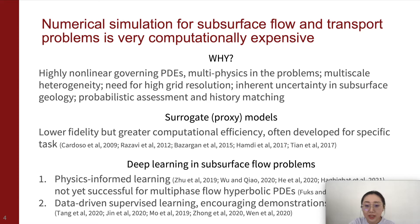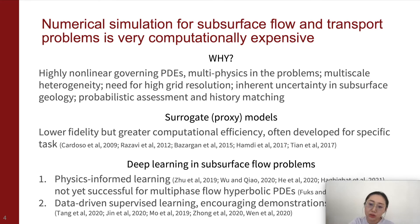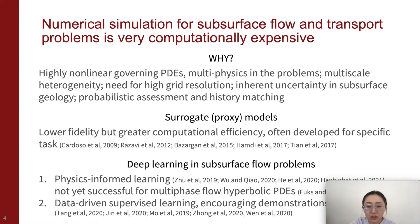In recent years, deep learning has shown growing potential in the subsurface flow community. Advancements can be categorized into two general categories. One is physics-informed learning, or physics-constrained machine learning, where people try to encode the governing PDE, the grid discretization, and the initial condition in the loss function and solve the problem through automatic differentiation. However, these models have not yet been successful in providing accurate approximations in the CO2-water multi-phase flow problem, and the computational gain is also not obvious.